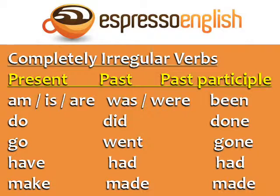Finally, we have the completely irregular verbs. These verbs don't follow any specific pattern, so you just need to memorize their past and past participle forms. The verb 'to be' is am, is, or are in the present; was or were in the past; and been in the past participle. Do, did, done. Go, went, gone. Have, had, had. Make, made, made.